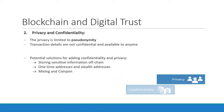Public and permissionless blockchain privacy is limited to pseudonymity, since network nodes are identified by their public keys, but transaction details are not confidential and are available to anyone. To overcome this issue, several technologies and protocols are listed as potential solutions for adding confidentiality and privacy, such as storing sensitive information off-chain, one-time addresses and stealth addresses, and mixing and coinjoin techniques.